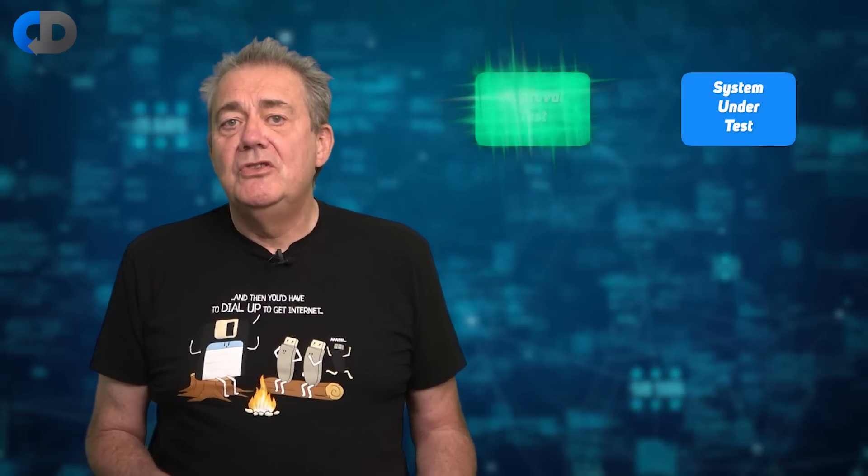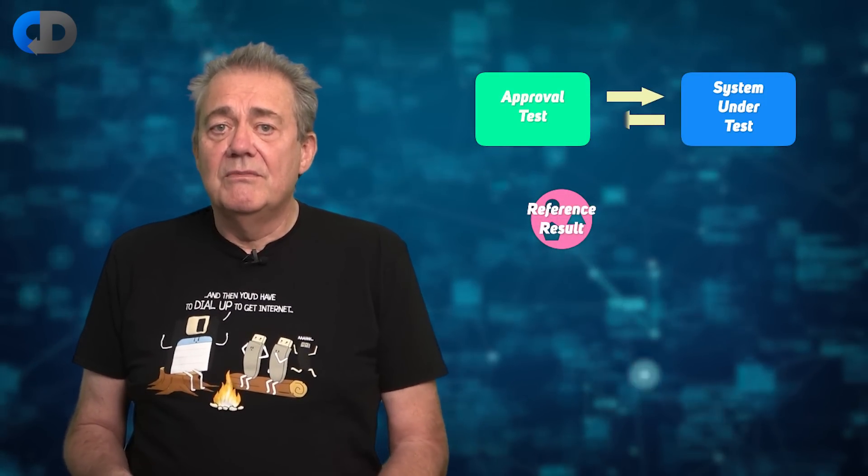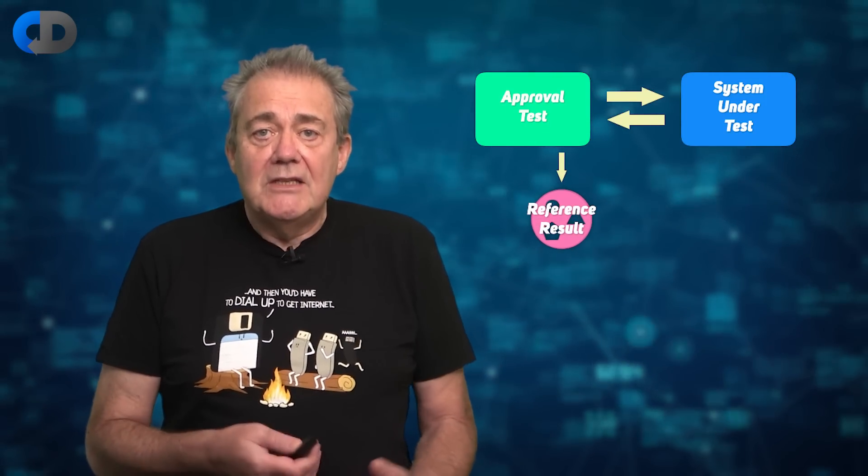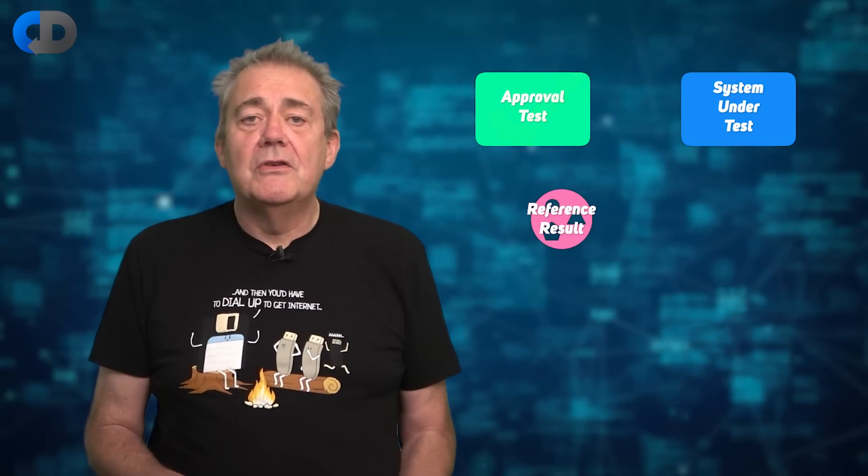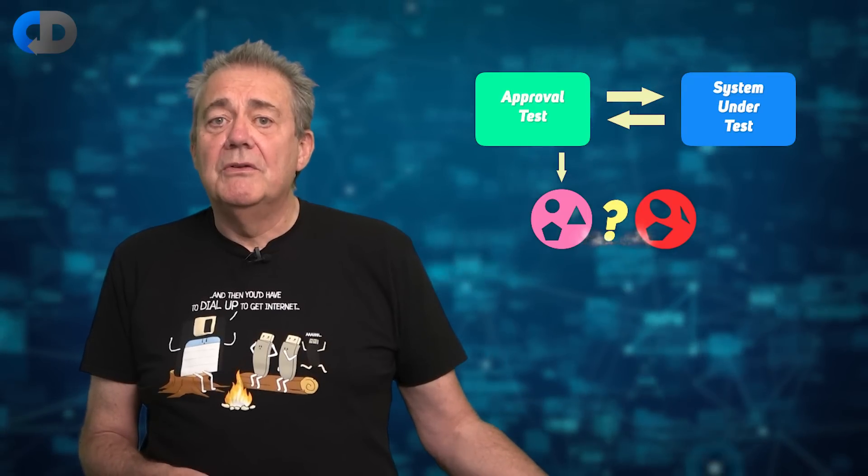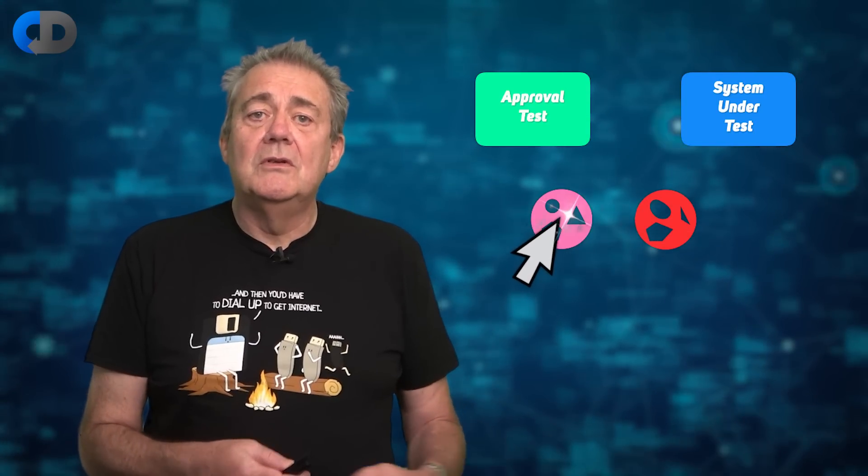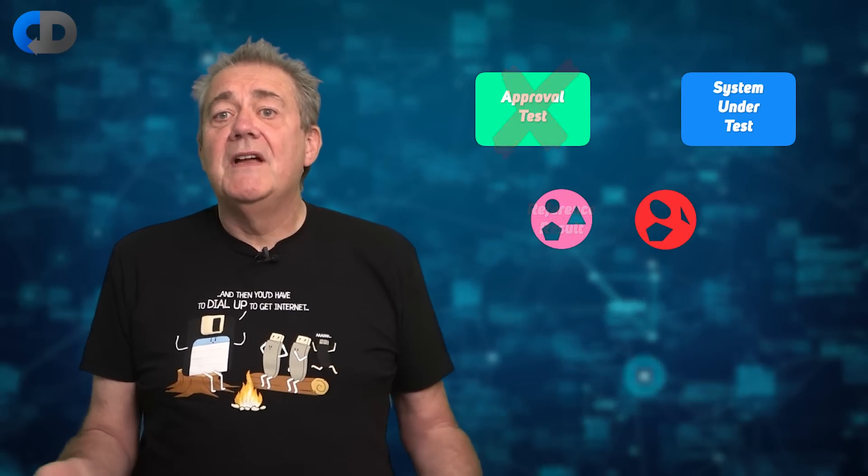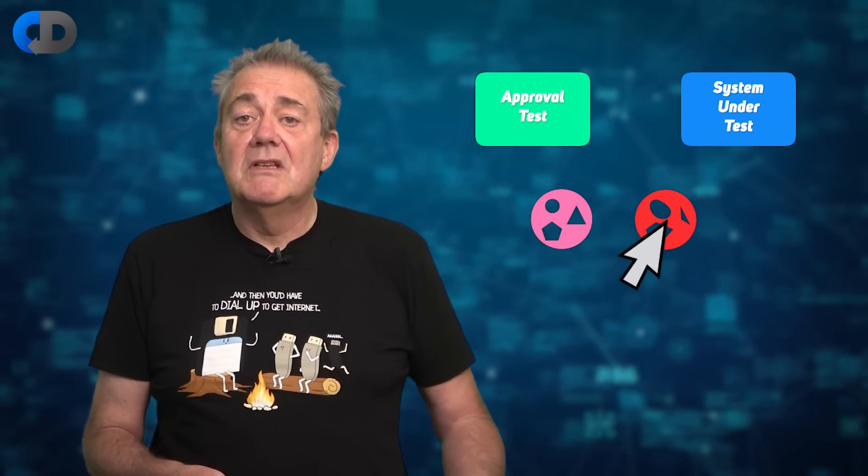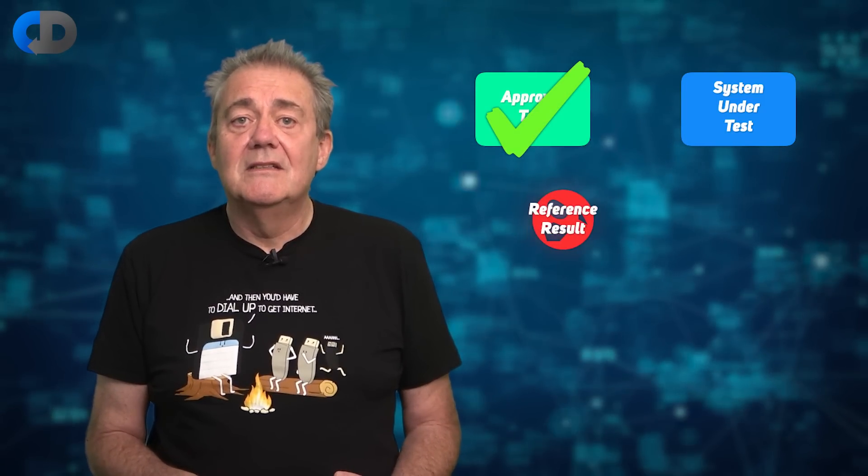What an approval test does is to record the result of some interaction with the system that you're working on. It stores the results in a file somewhere, and then the next time that you run the test, it compares the results that you just got from the code with the reference results that you stored in the file earlier. If anything changes in the results, the test fails. If the results are the same, the test passes. This is a great tool. You don't even need to understand the results.